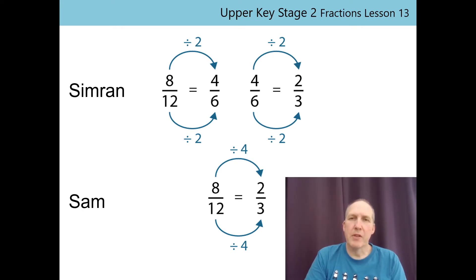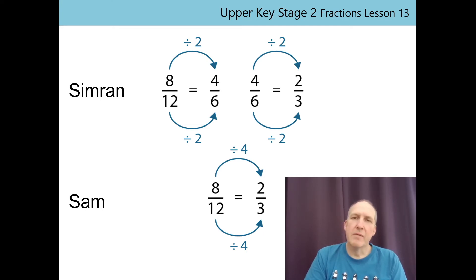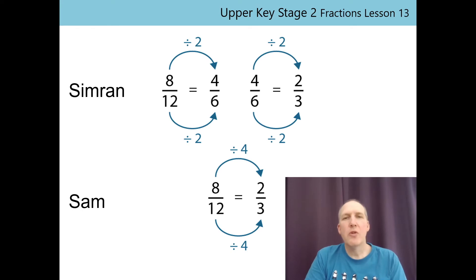What's the same about the two methods? You're right — they both simplified the fraction to 2/3rds. So what's different? Simran used two steps, dividing both the numerator and denominator by 2 twice. Sam chose the highest common factor, so he only needed one step. Did you choose one of these methods? Whose method was the most efficient? It was Sam's — Sam chose the highest common factor of 8 and 12, so he only needed one step.